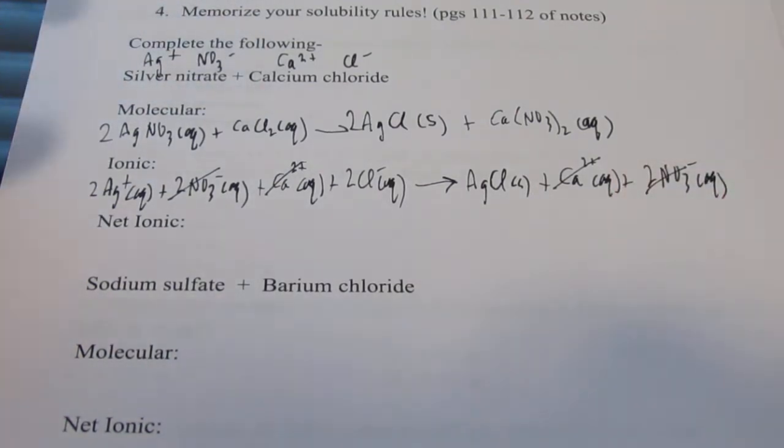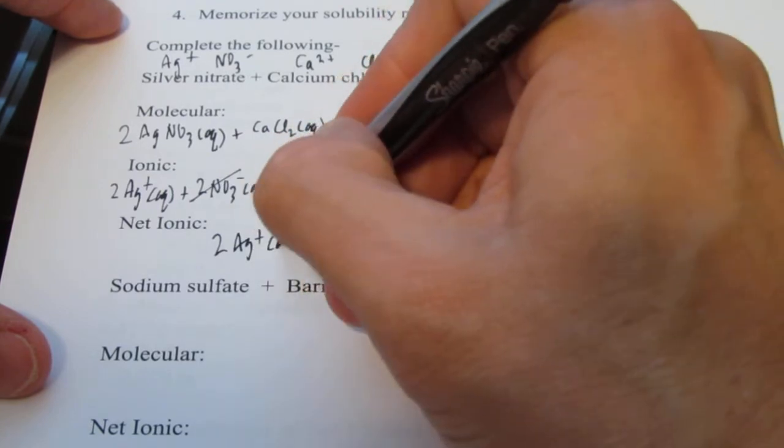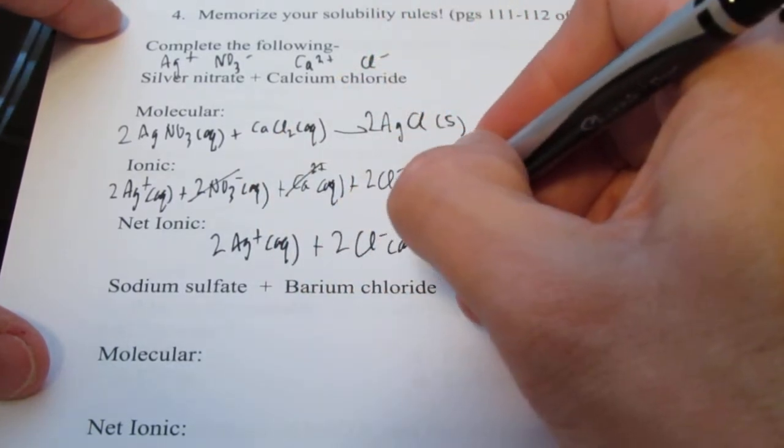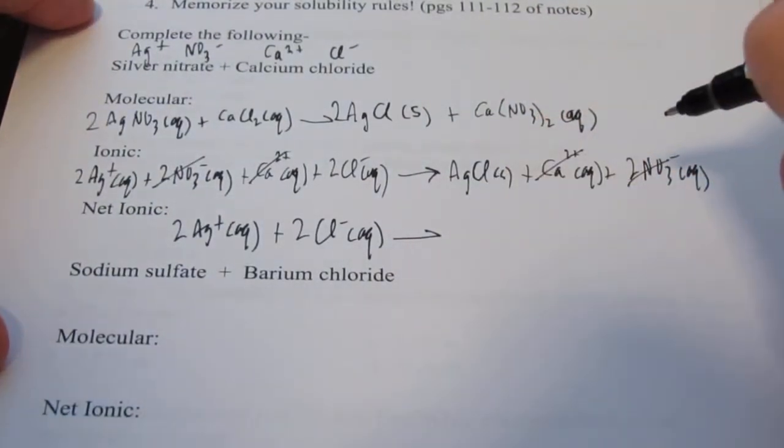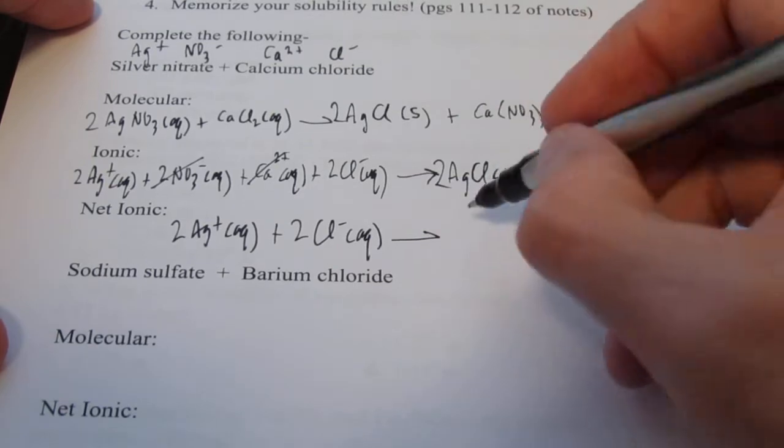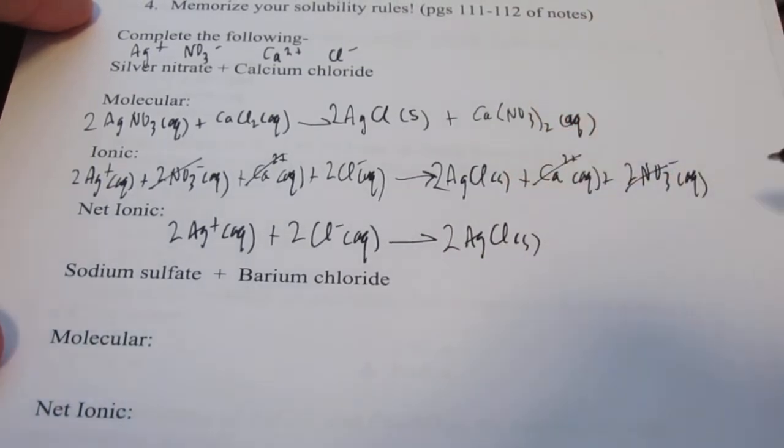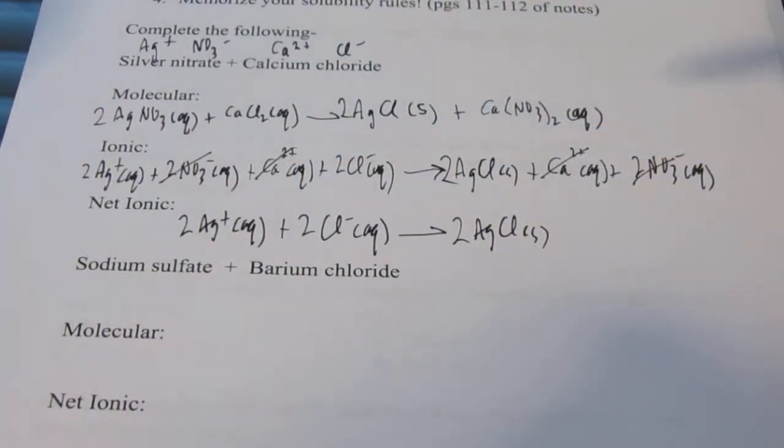Now are there any spectator ions here? That means they're the same on this side as they are on the other side. The calcium 2+ are the same and the two nitrates are the same. I've cancelled out my spectators. Whatever is remaining is my net ionic. In this case, I have 2 Ag+(aq) and 2 Cl-(aq), and they react to form 2 AgCl(s). That's my net ionic.